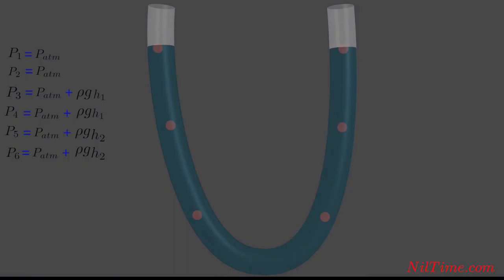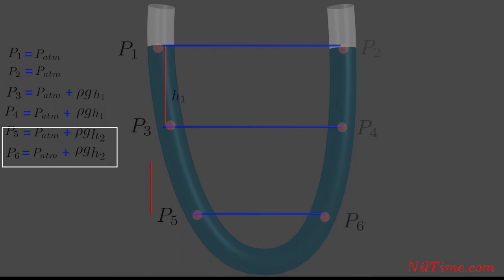Now let's calculate the pressure at these different red points. P1 equals P2. They are at atmospheric pressure. P3 equals P4, and both have the same height H1. The same thing is for P5 and P6.